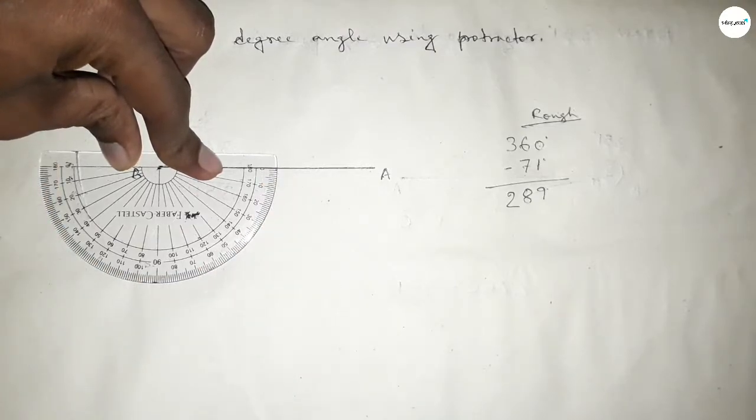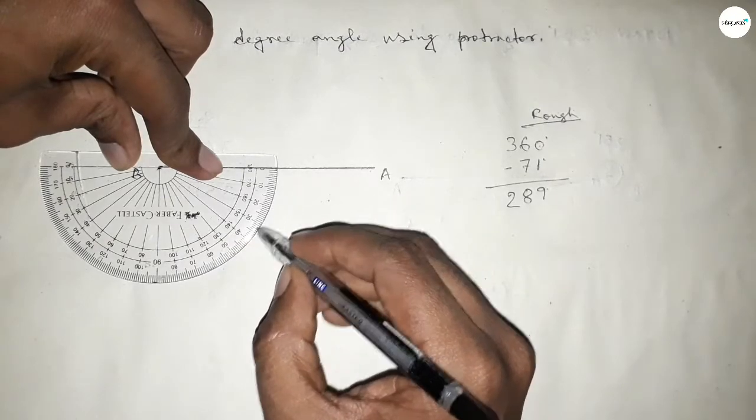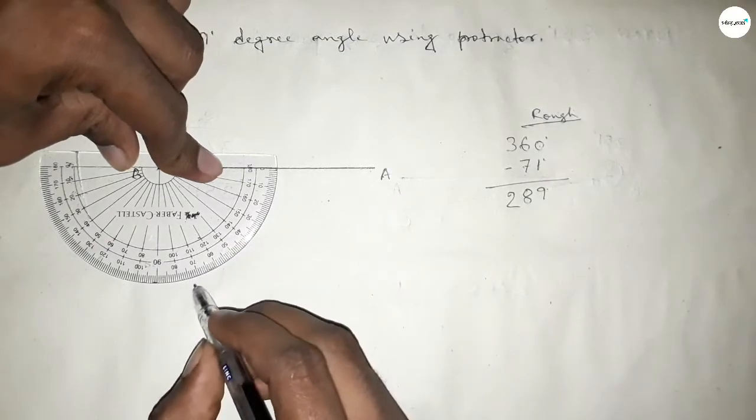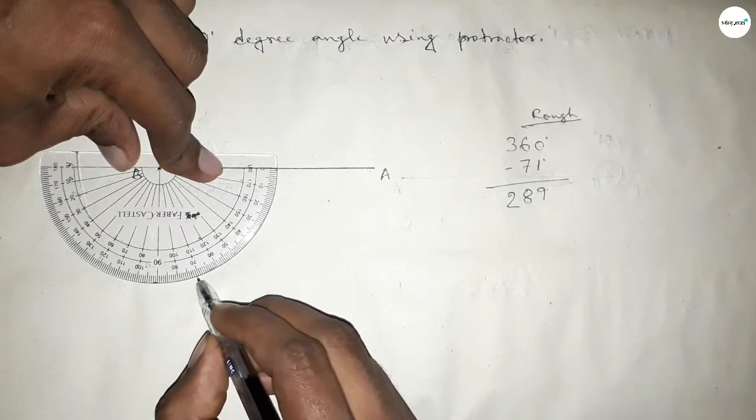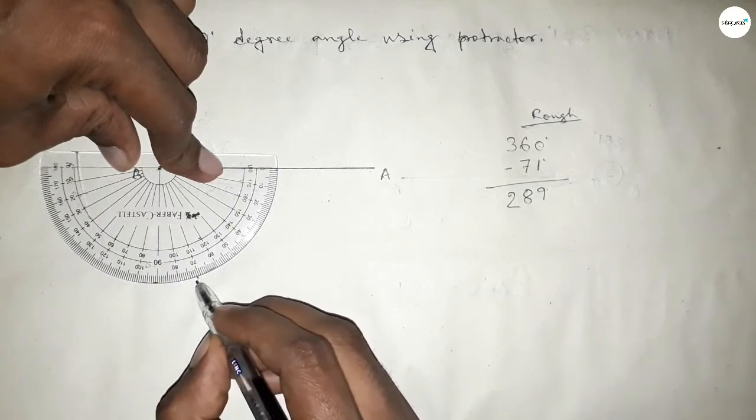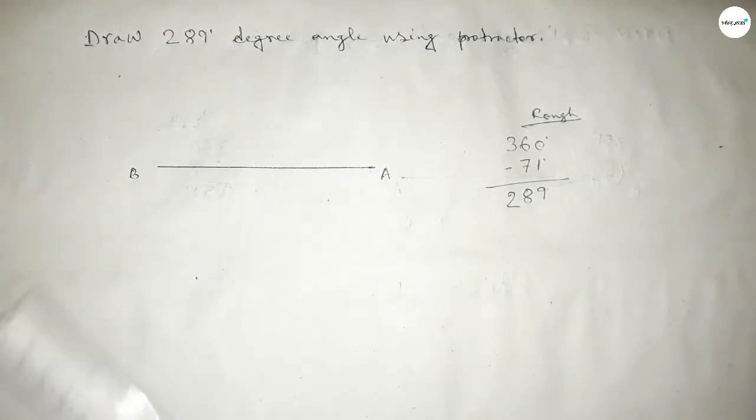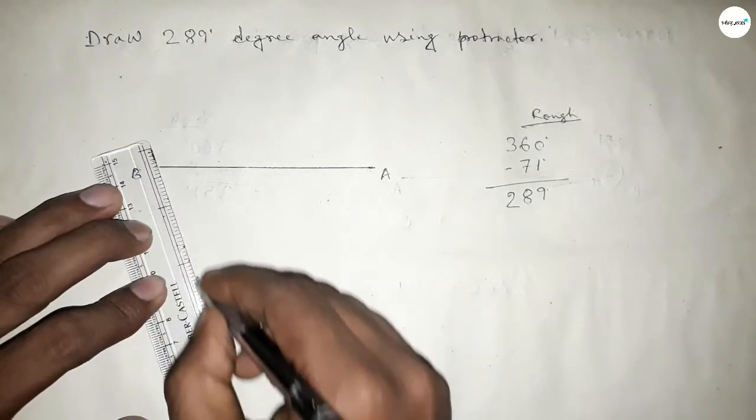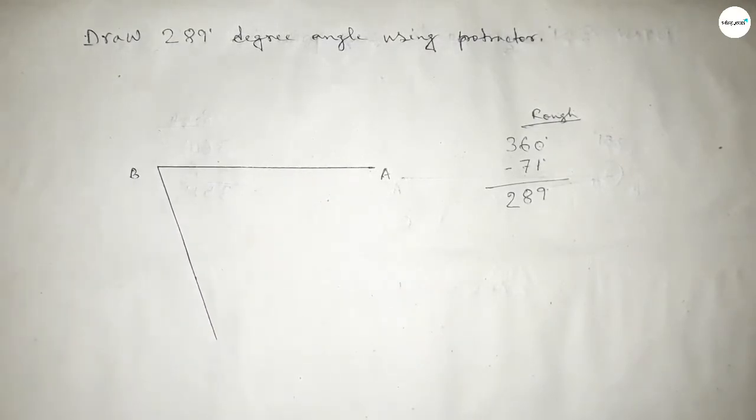Now counting 71 degrees: 10, 20, 30, 40, 50, 60, 70, and this is 71 degree angle. So if we subtract 71 degree angle from 360 degrees, then we can get 289. Now joining this side and taking here point C.